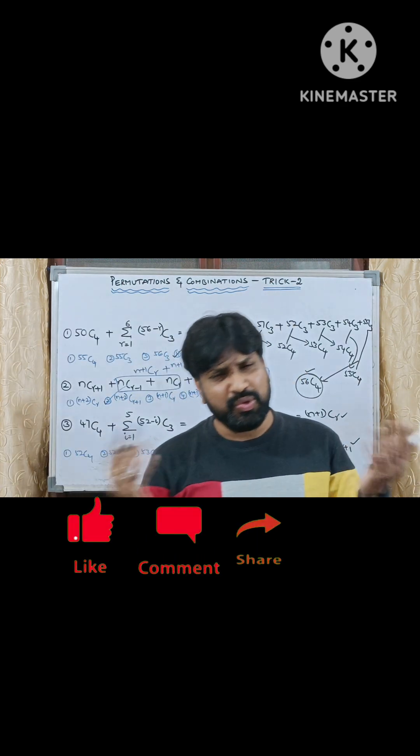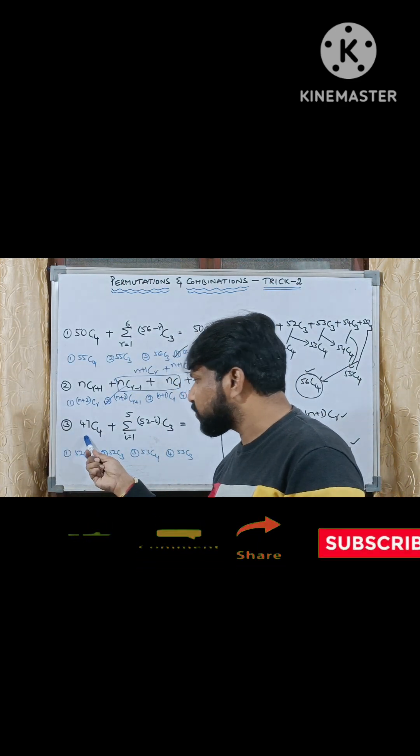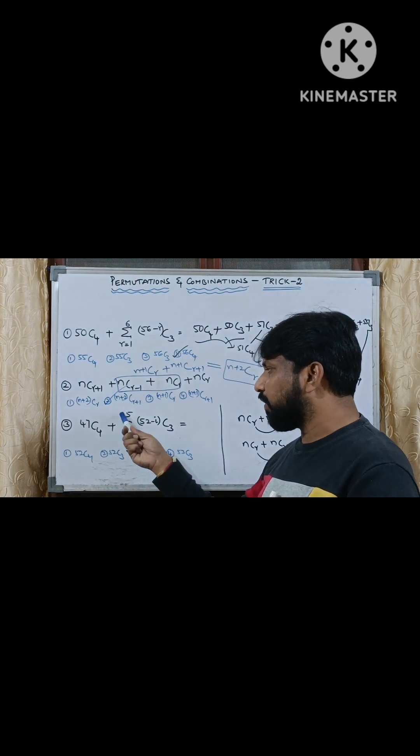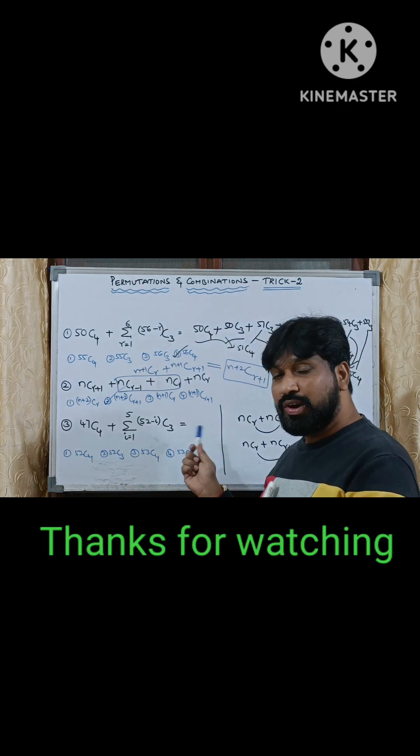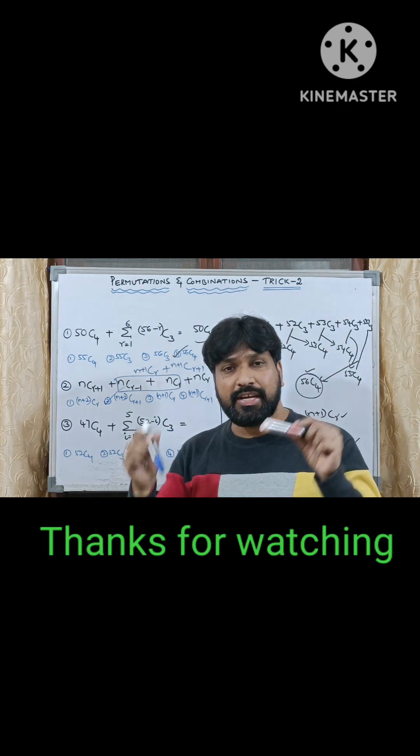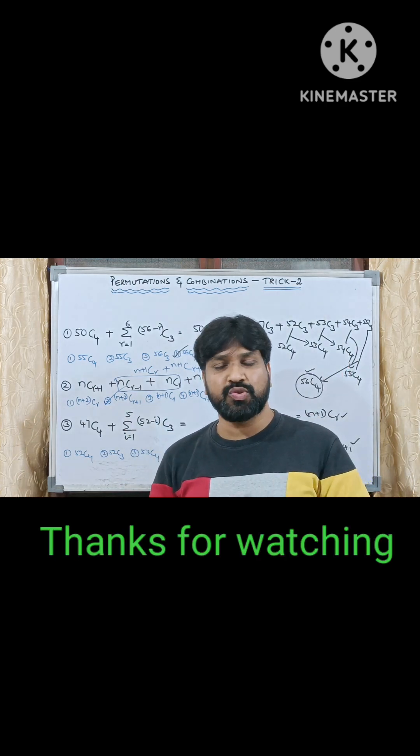Option 2 is the correct answer. So that's all, it's a very easy concept. Next question: 47C4 plus sigma, R running from 1 to 5, 52 minus I C3 equals to dash. That is your work. Complete it and drop your answer in the comment box. Thank you so much.